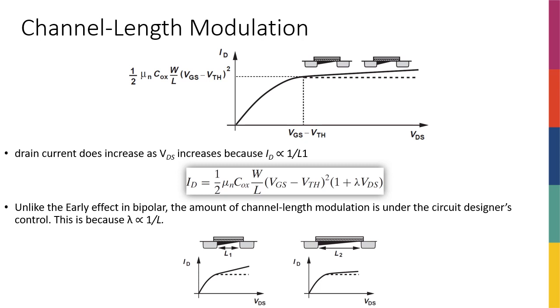Of course, similar to BJT, where things were not really ideal and beautiful and we had early effect, here we have something called channel length modulation.